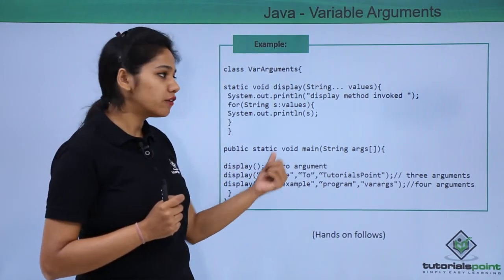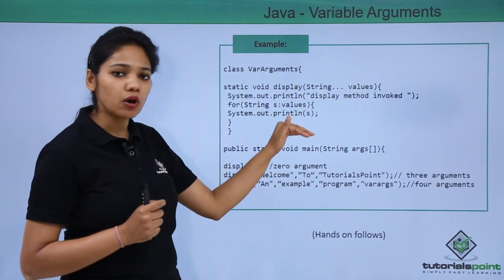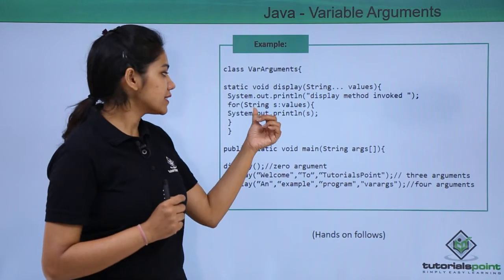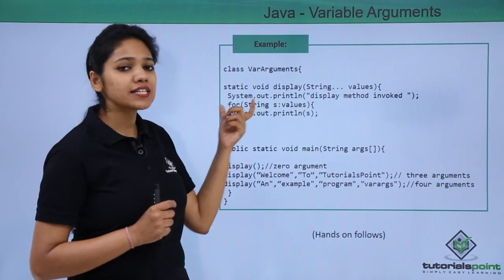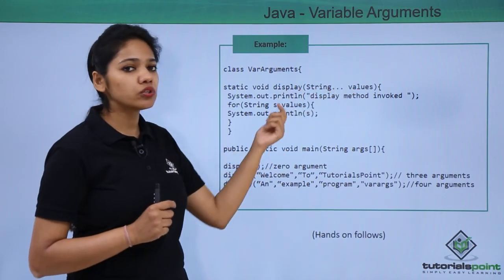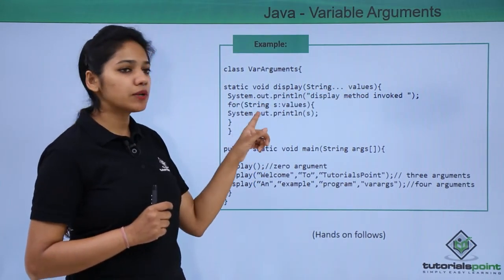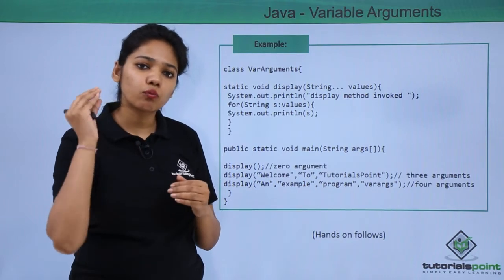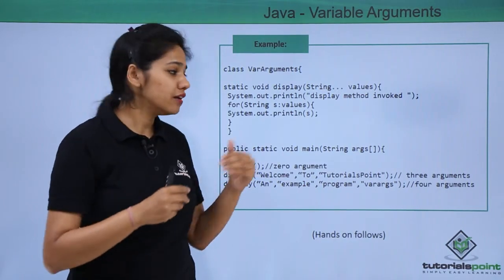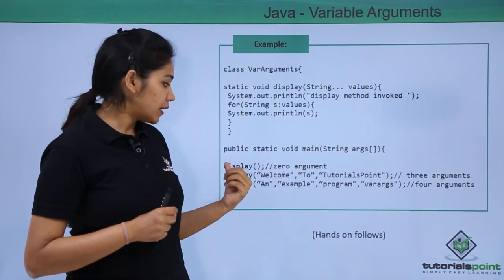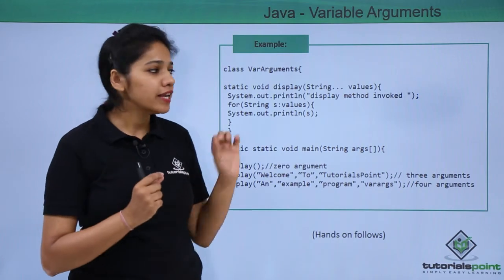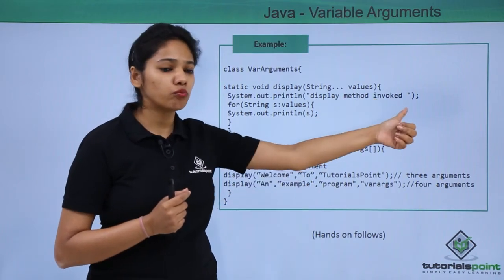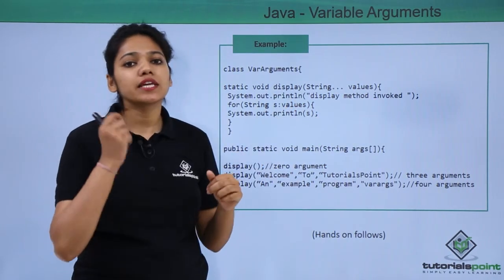When you call the display method with no argument, it executes the block of statements. It first executes a println that outputs 'display method invoked'. Then an enhanced for-loop tries to iterate over the values variable, storing each into a string variable s. But since there are no arguments, no action is taken in the loop — only the 'display method invoked' message is printed.